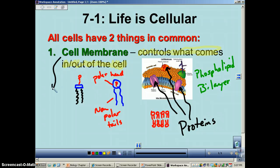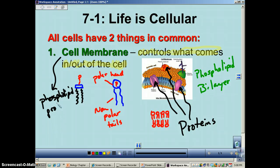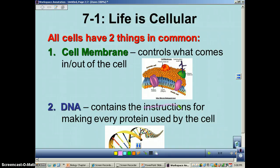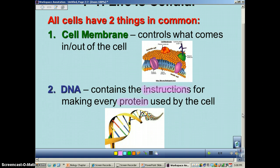So a cell membrane is pretty much made out of two main things: phospholipids and proteins. There'll be some other components covered in another podcast. That's the first of the things all cells have in common. The next one is DNA. You've got to have DNA because it contains the instructions for making every single protein. Remembering transcription and translation from previous chapters, that gets you from DNA to RNA to protein — your central dogma of biology.